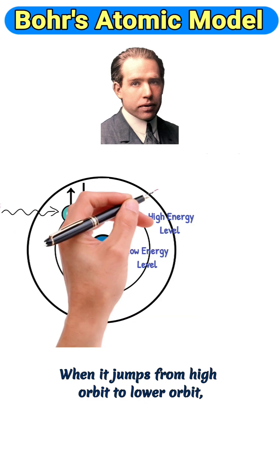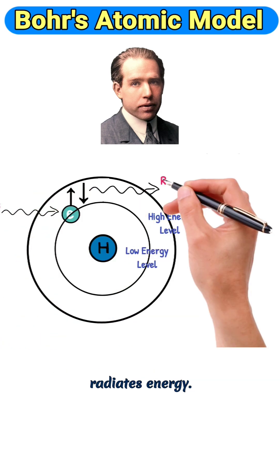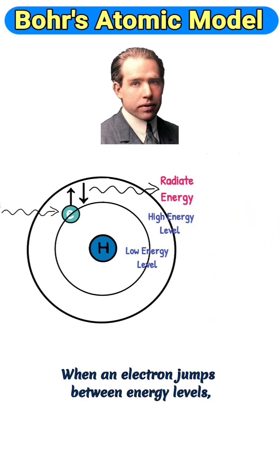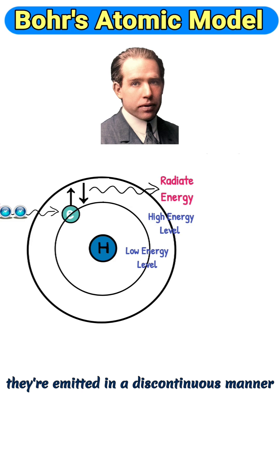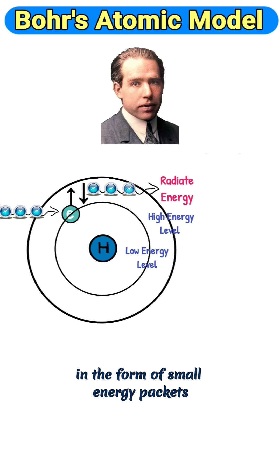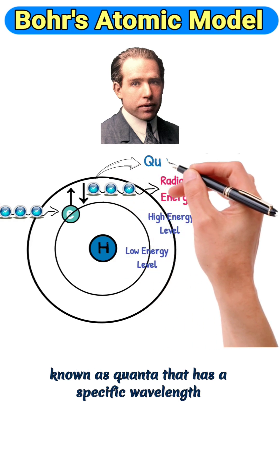When it jumps from a higher orbit to a lower orbit, it radiates energy. When electrons jump between energy levels, they absorb or emit energy in a discontinuous manner, in the form of small energy packets known as quanta.